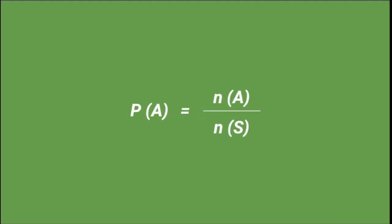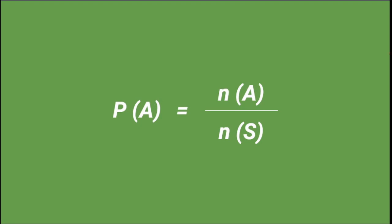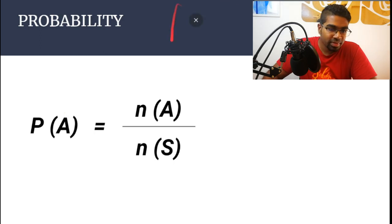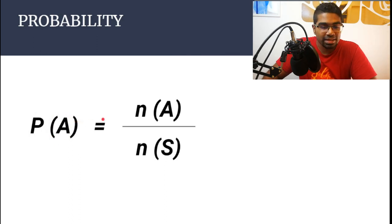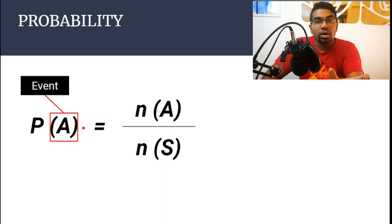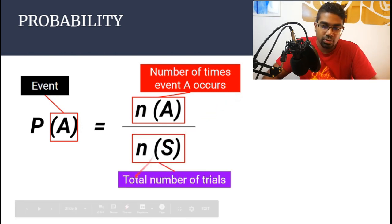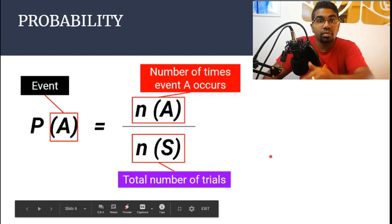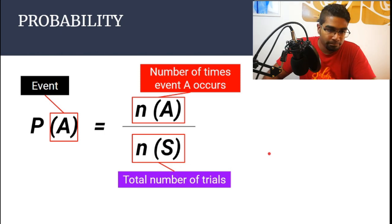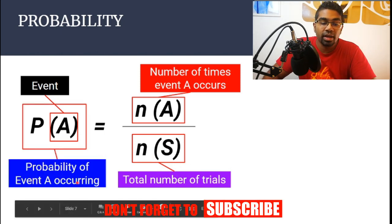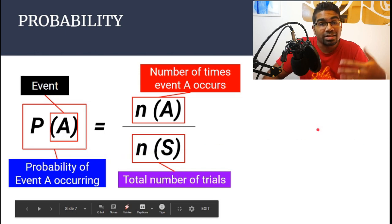When you're dealing with probability of an event, this is the formula that you will see. Let's examine the formula. Here we have P(A). You have to understand what A is — A is the event, A is what we want to find the probability of. NA is the number of times event A occurs, how many times A happens. And NS is the total number of trials or the total number of our data sample. PA is the probability of event A occurring — how likely is it to happen. That is probability.